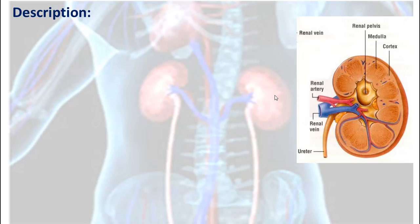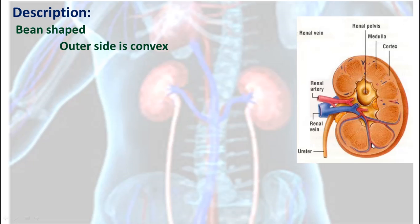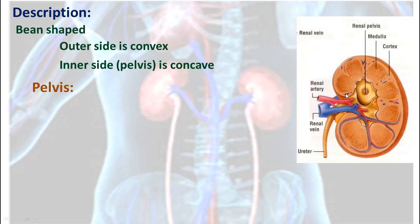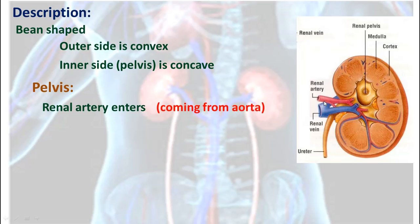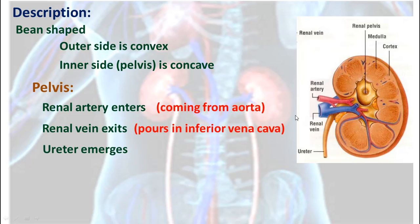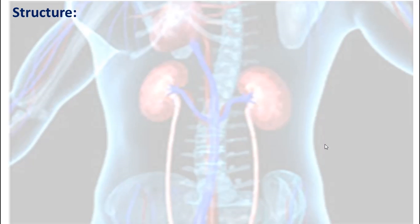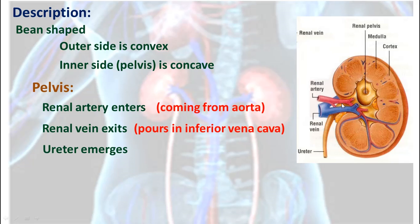The kidneys are bean-shaped. The outer side is convex, and the inner side is concave, and the inner side we call the pelvis. The pelvis is the inner concave side of the kidney, from which the renal artery enters — the renal artery is a branch from the aorta — the renal vein exits and pours into the inferior vena cava, and also the ureter emerges. All of this happens in the pelvis of the kidney.